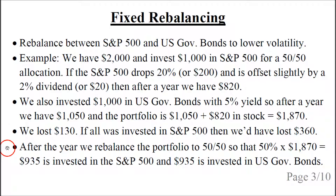So we lost $130 from our $2,000 — the loss is not quite as bad. After the year is over we rebalance the portfolio to 50-50 again, so that 50% of $1,870, or $935, is invested in the S&P 500 and another $935 is invested in US government bonds.